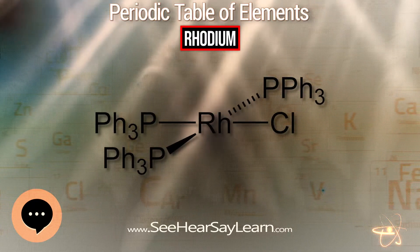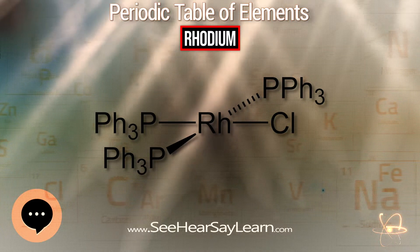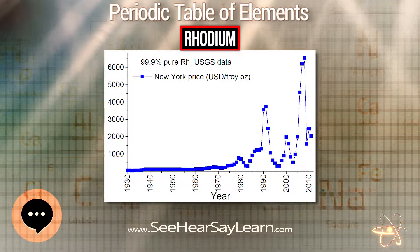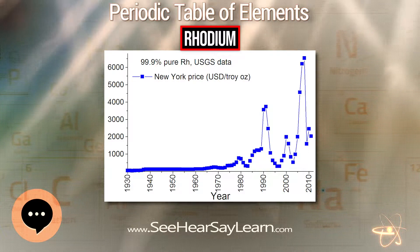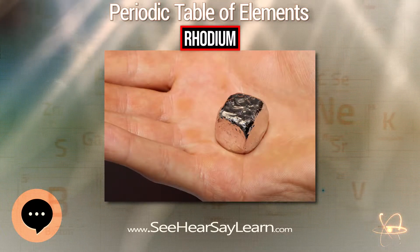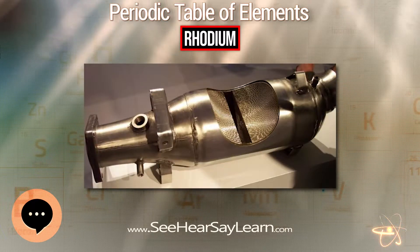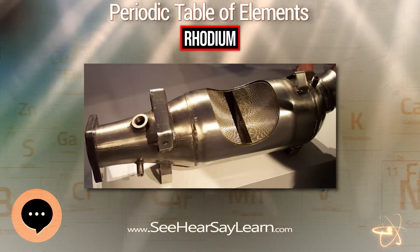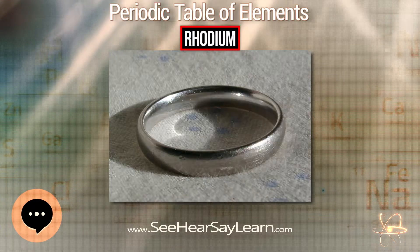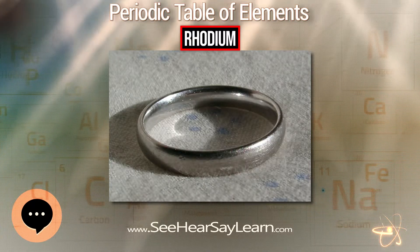Diluted nitric acid dissolved all but palladium and rhodium. Of these, palladium dissolved in aqua regia but rhodium did not. The rhodium was precipitated by the addition of sodium chloride as Na3RhCl6. After being washed with ethanol, the rose-red precipitate was reacted with zinc, which displaced the rhodium in the ionic compound and thereby released the rhodium as free metal.